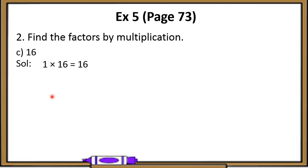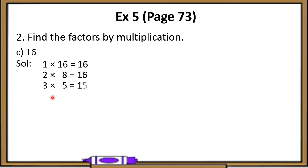So let's write the multiplication fact for this: 2 multiplied by 8 is equal to 16. Now let's check whether 3 is a factor or not. On division of 16 by 3, we get a remainder of 1, because 3 fives are 15, and when we subtract 15 from 16, we get remainder 1.